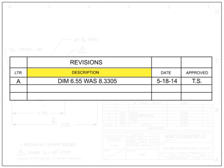The description area contains the general change information as well as what prompted the change. Documents that initiate drawing changes are called engineering orders, engineering change orders, or engineering change proposals. These documents are typically given a number and referenced in the description of the change on the drawing. The date and approved columns show when the change was made and who approved it, helping to track the history of changes to the blueprint.